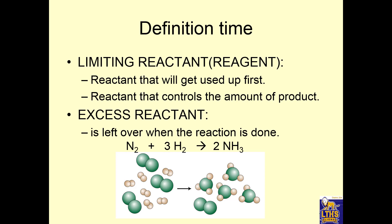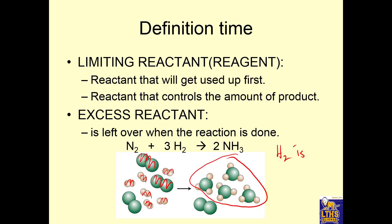Here's a diagram for this balanced equation. The N2 is green and the H2 is white. For every one N2 we use up, we're going to use up three H2s. We use up one N2, we use up three H2s, and using all of that, we get four NH3 molecules. But you notice that one N2 doesn't get used up, so the H2 is the limiting reactant and the N2 is the excess reactant. We're going to be able to get four NH3 molecules based on the limiting reactant, and one N2 will be left over.